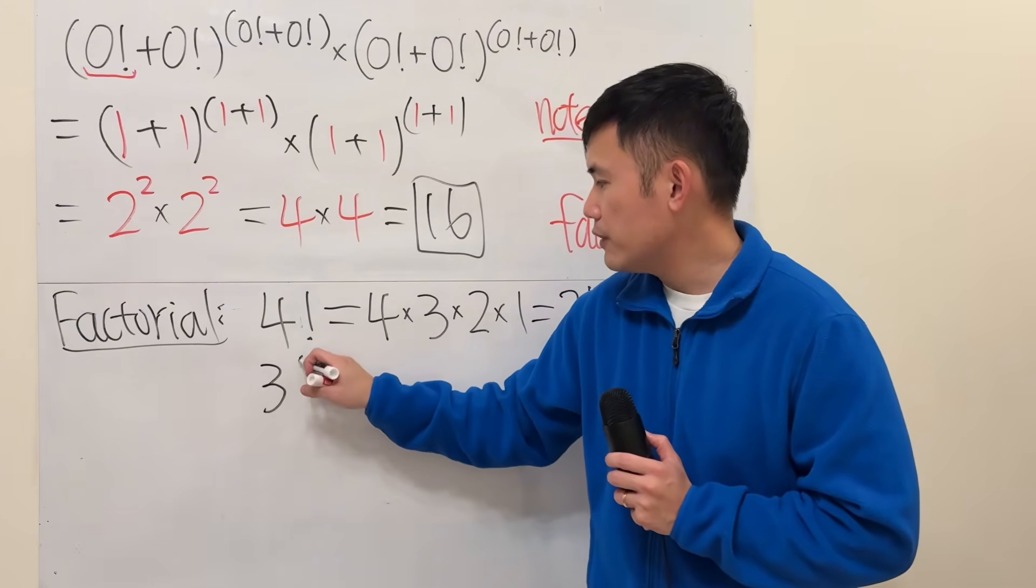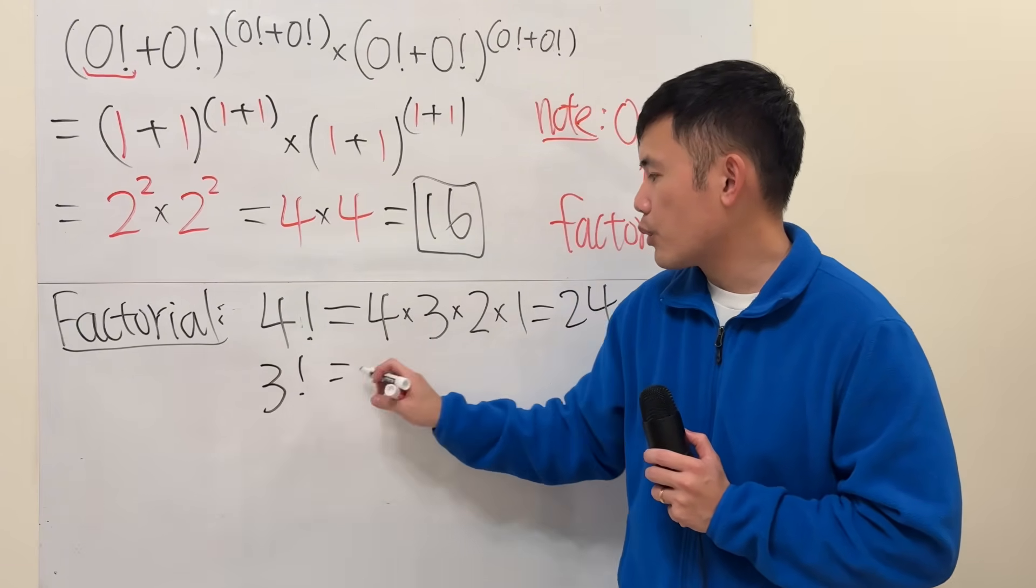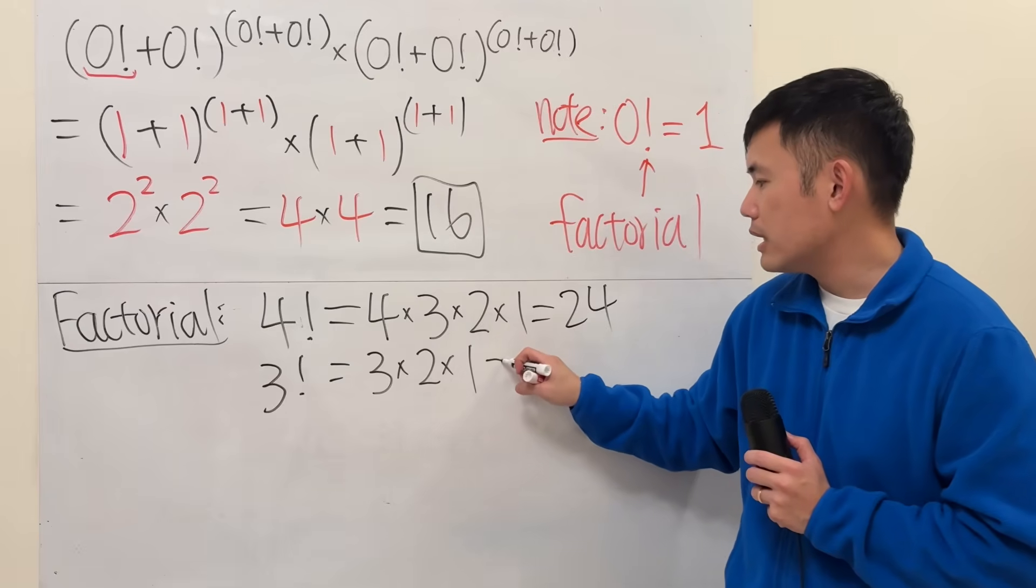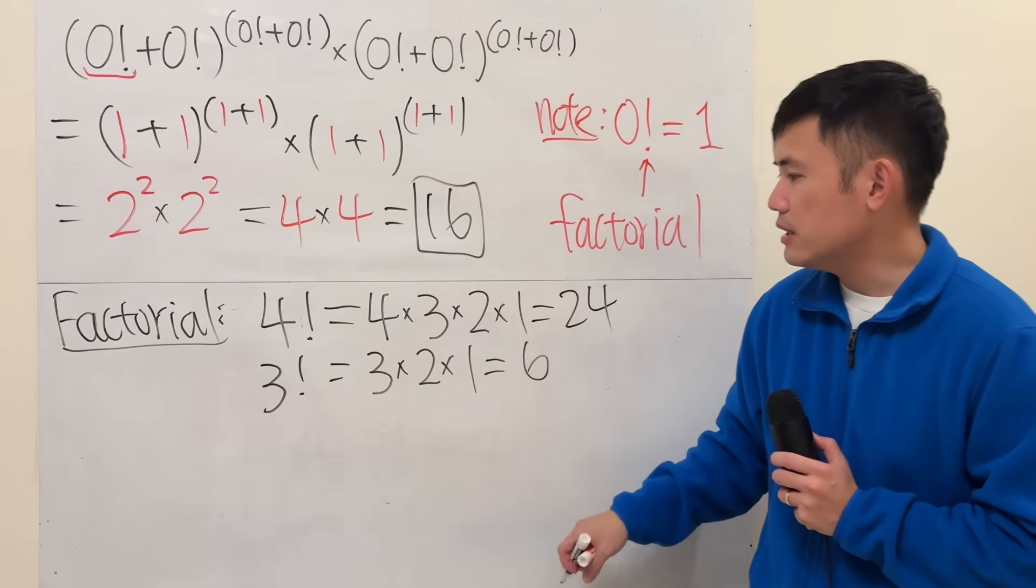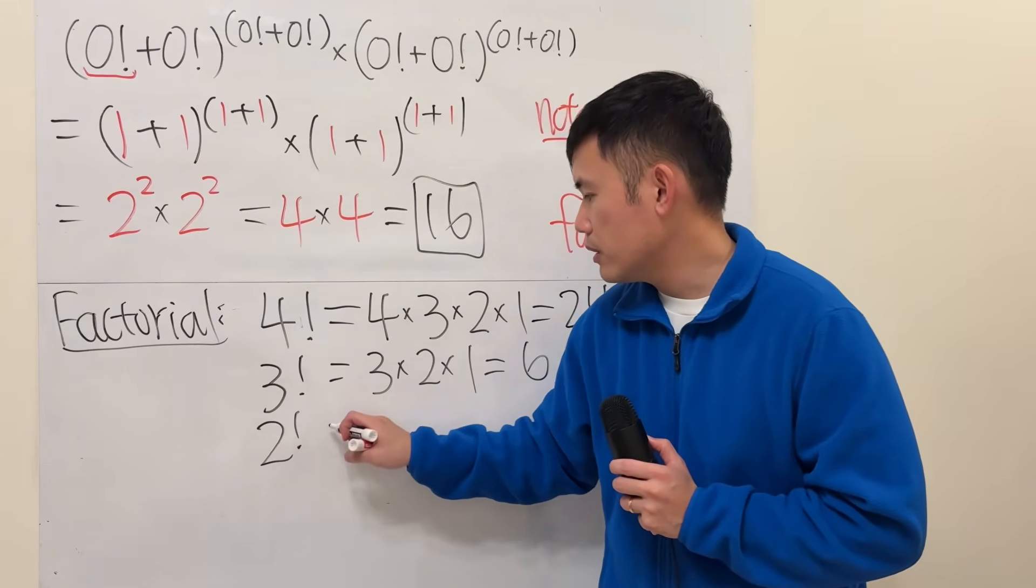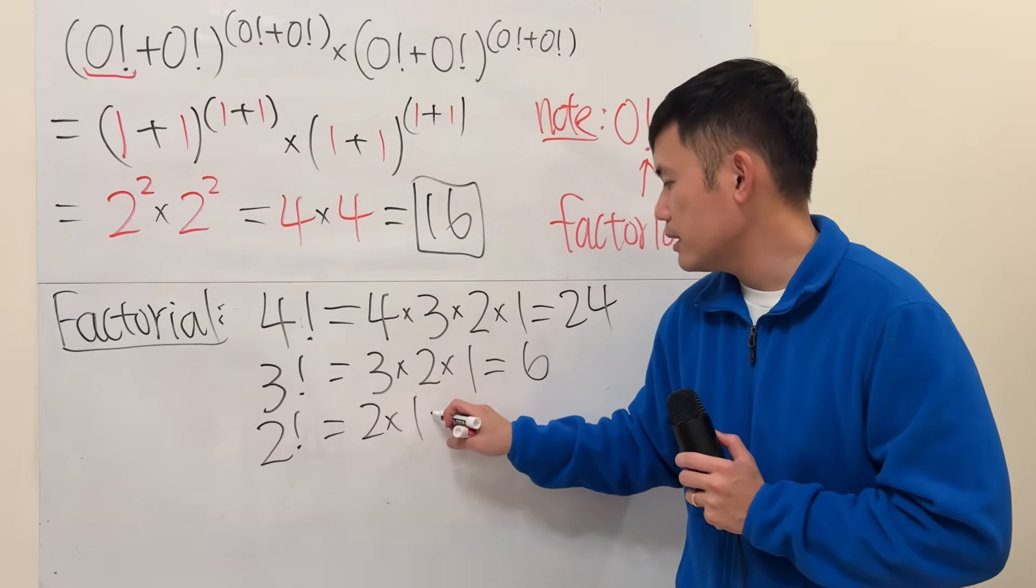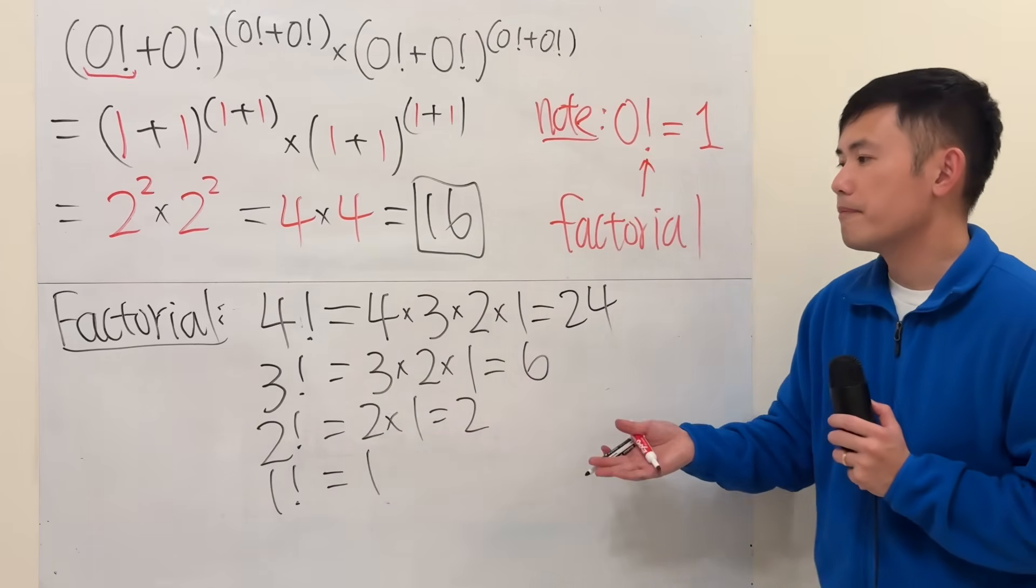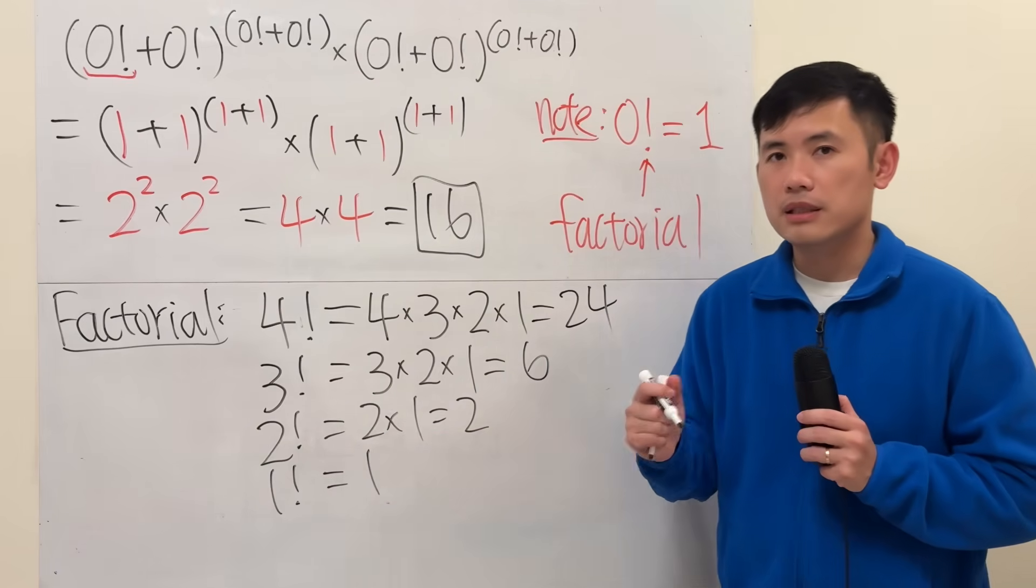Similarly, if you have 3 factorial, you start with 3, multiply by 2, multiply by 1, and the answer is 6. Then 2 factorial is just 2 times 1, which is 2. And 1 factorial is simply just 1.